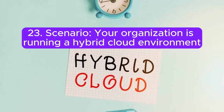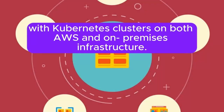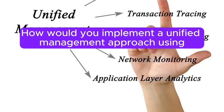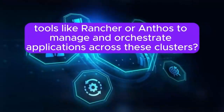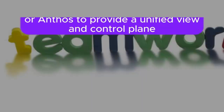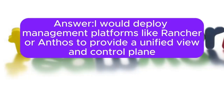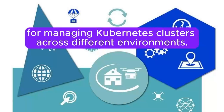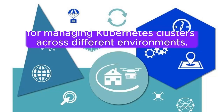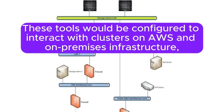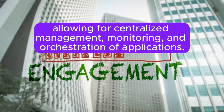Scenario 23: Your organization is running a hybrid cloud environment with Kubernetes clusters on both AWS and on-premises infrastructure. How would you implement a unified management approach using tools like Rancher or Anthos to manage and orchestrate applications across these clusters? Answer: I will deploy management platforms like Rancher or Anthos to provide a unified view and control plane for managing Kubernetes clusters across different environments. These tools would be configured to interact with clusters on AWS and on-premises infrastructure, allowing for centralized management, monitoring, and orchestration of applications.